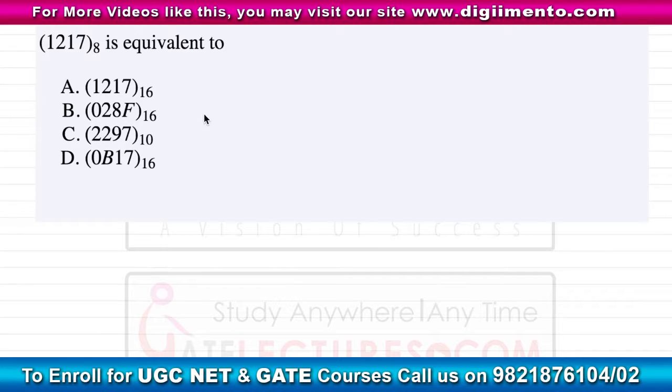In this question we have given this number which is present in the octal number system. The value of this number is 1217 which is in octal number system and we have to convert it into the equivalent hexadecimal number.